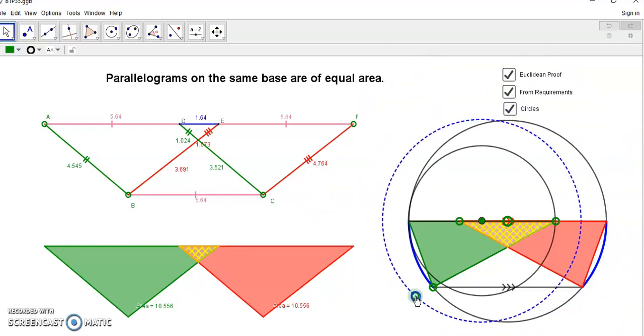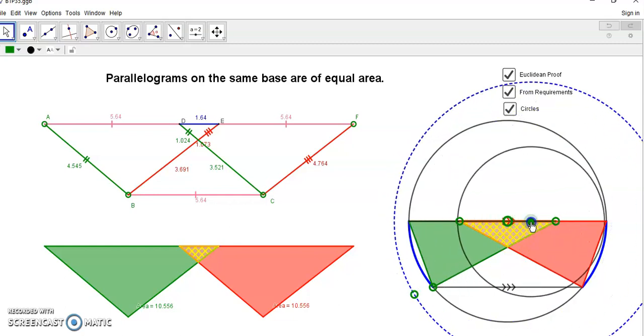And of course, if we stretched out the green angle, so that it meets on a similar arc, then again, once again, the green triangle and the red triangle will also have the same area.